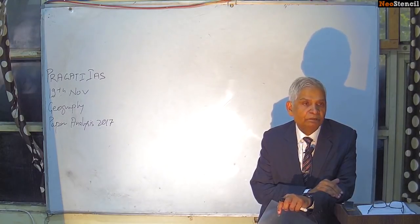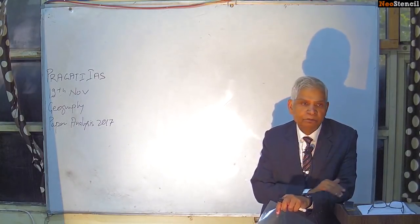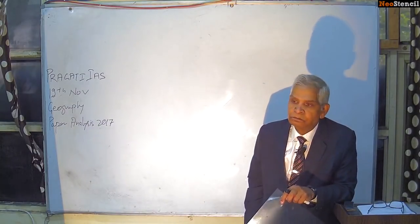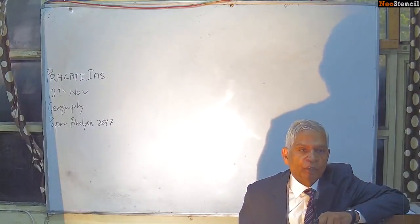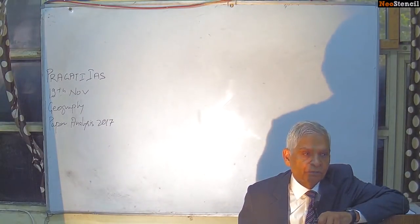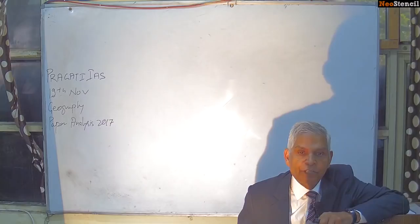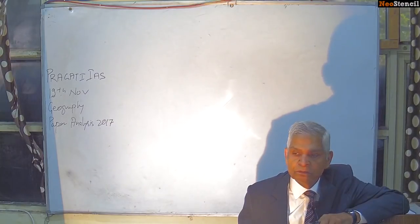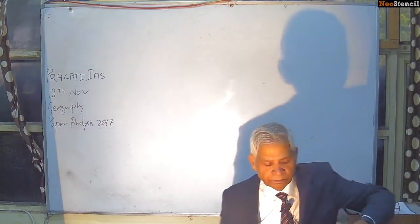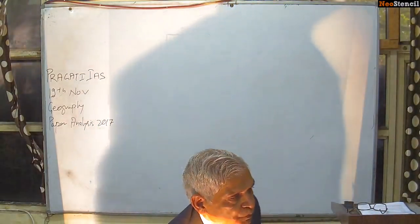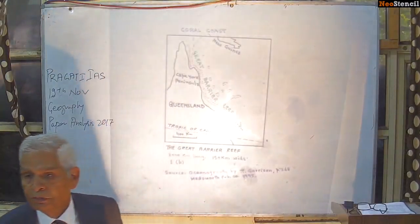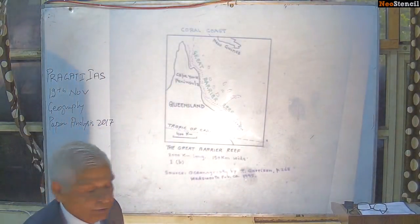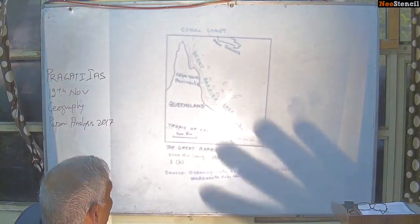But the Chile coast, the Peru coast, the Japan coast, and the Philippines coast are high energy coasts. And if you are not in a position to give the diagrams of fringing reef, barrier reef, and atolls, give the diagram of the Great Barrier Reef.